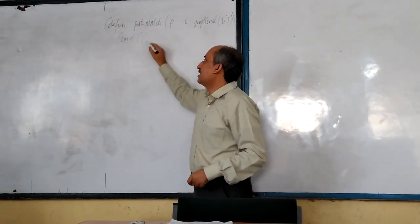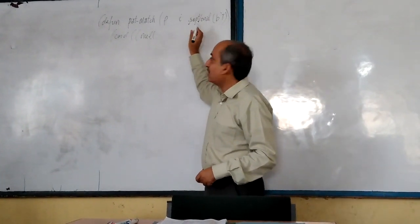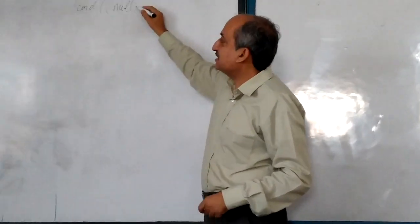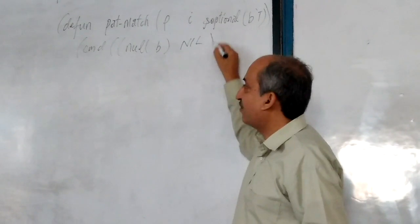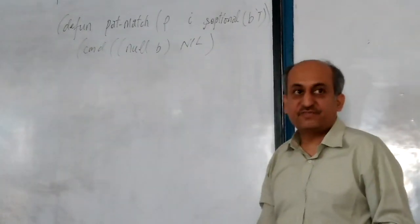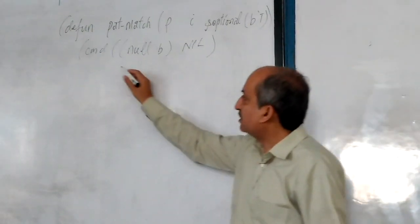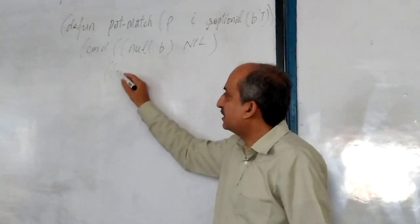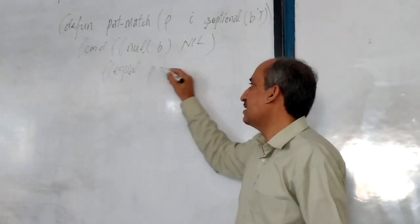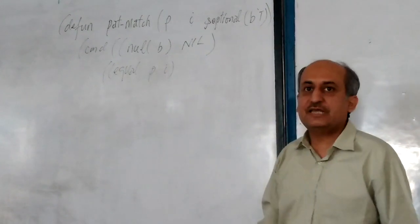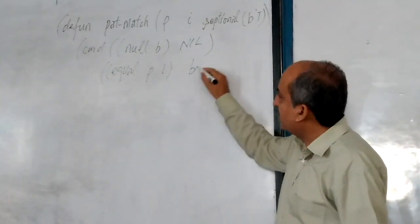In the COND statement, we have four clauses. In the first clause, if the third argument B is nil, then return nil — that means false, the answer will be false. In the second clause, if B and I — if pattern and input are exactly equal, they are the same — then we return the binding, the answer variable will be returned.